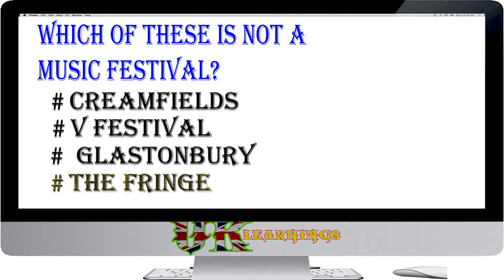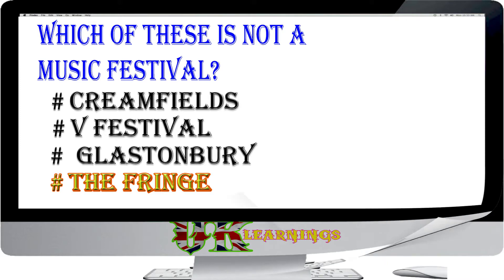Which of these is not a music festival? Options: Creamfields; V Festival; Glastonbury; The Fringe. The answer is The Fringe. The Edinburgh Festival takes place in Edinburgh, Scotland, every summer. The Fringe, one of the festivals, is a showcase of mainly theatre and comedy performances.